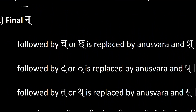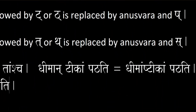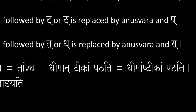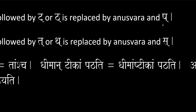When a final na is followed by ata or atha, it is replaced by an anusvara and a sha. So 'dhiman trikaam pathati' ends up being 'dhimash trikaam pathati cha' — remember it's a half cha, also represented by a cha with a halant cerebral cha.